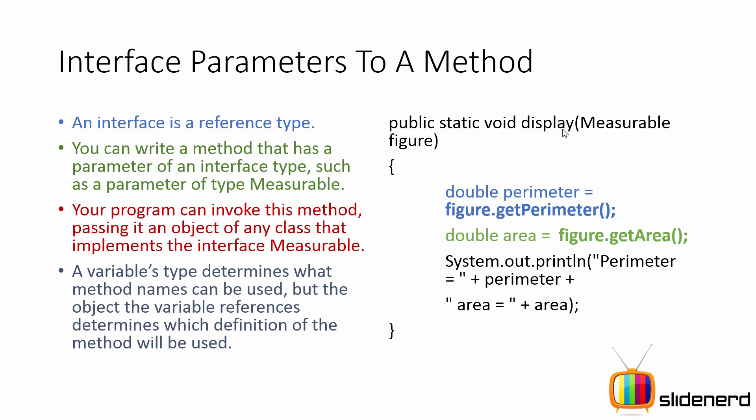If you're wondering how this is going to work, you're saying okay, there's a measurable figure variable here and you're passing a rectangle object there, how is this possible? It is the same principle which I have already discussed in my playlist videos: a superclass reference variable can refer to a subclass object.